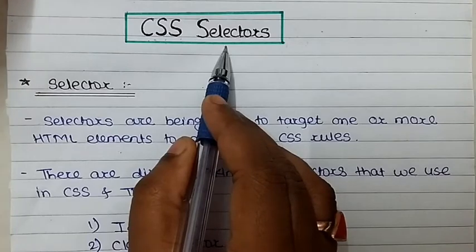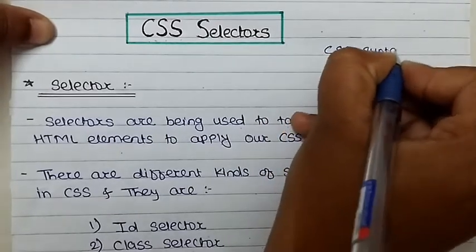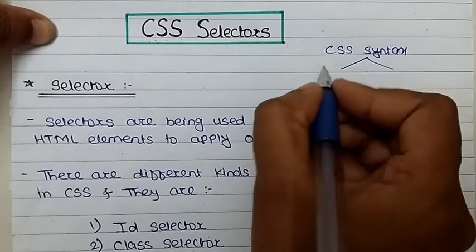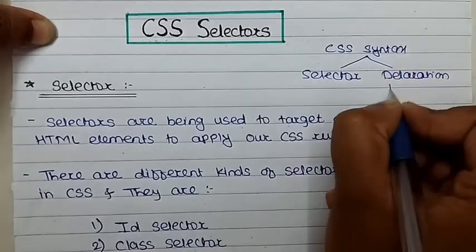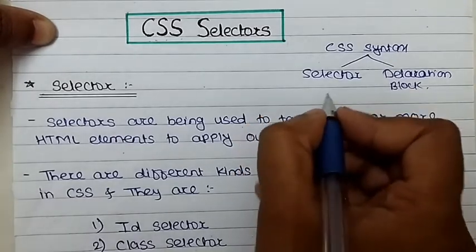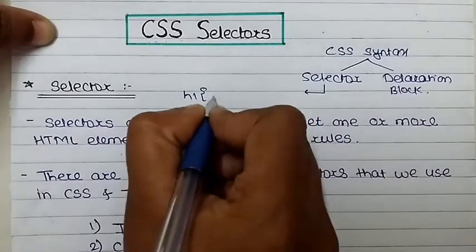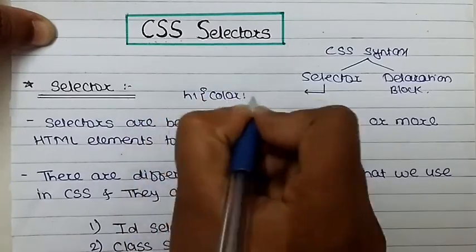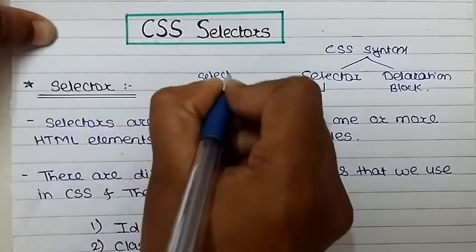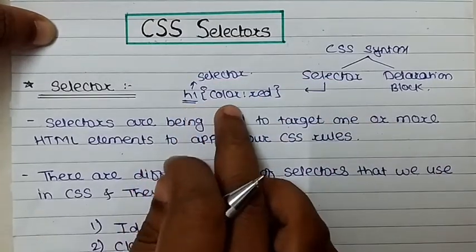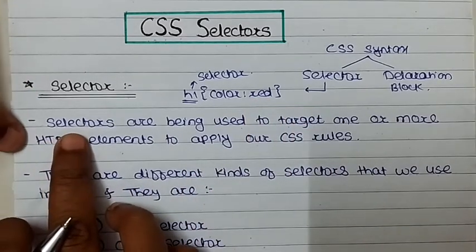CSS syntax is divided into two parts: the selector and the declaration block. For example, when we write H1 with curly brackets and set color to red — H1 is the selector, color is the property of that selector, and red is the value of that selector.